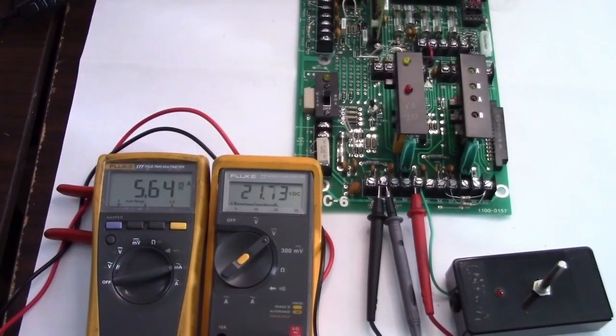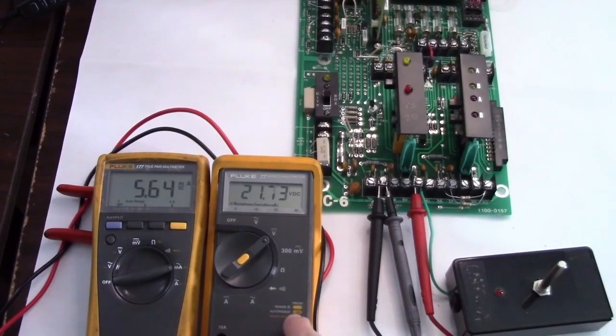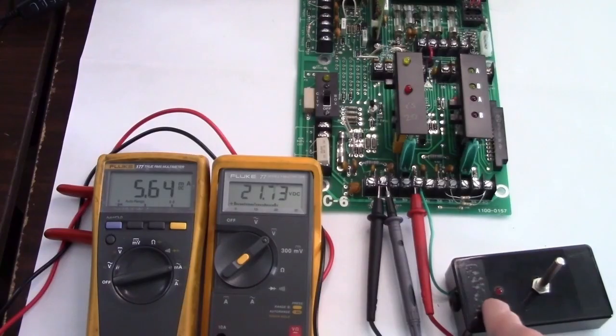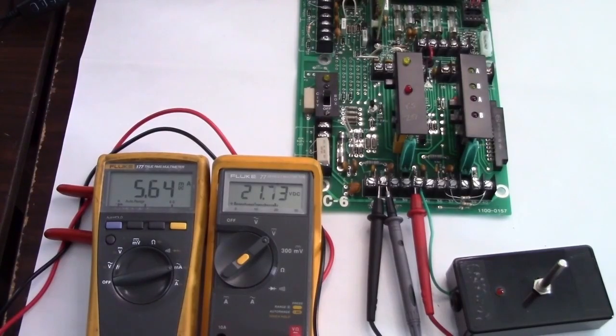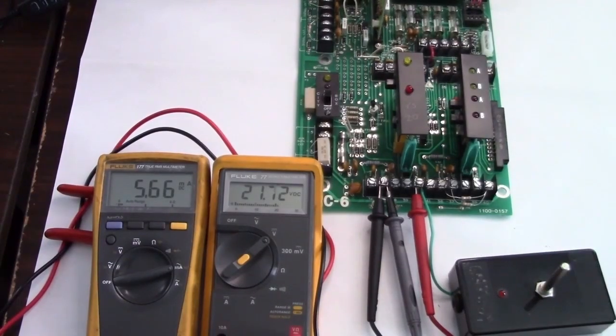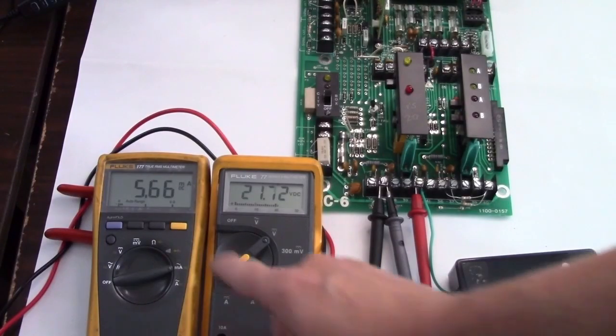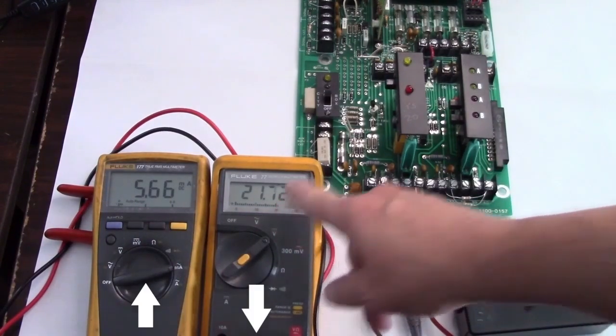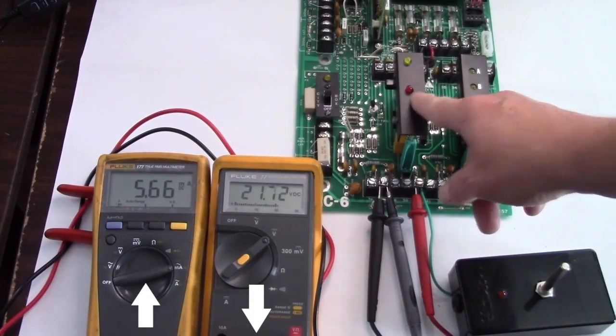To help illustrate how a supervised circuit operates, we have two meters here. The one on the right is set to DC volts and it's connected in parallel across the zone. The one on the left is set to current and is connected in series with its variable resistor. We can determine at what points the zone will go into alarm and trouble. How this operates would also apply to a notification circuit and even a monitor module on an addressable system. Let's watch how the meters are affected as we reduce the resistance across the zone. The current will increase on this meter and the voltage will decrease on this meter per Ohm's law. At some point the zone will go into alarm.